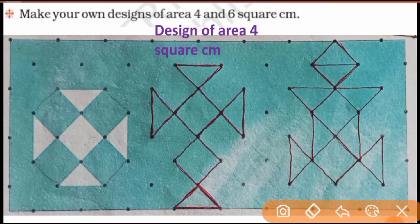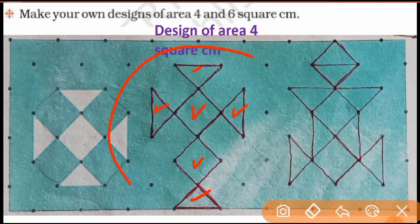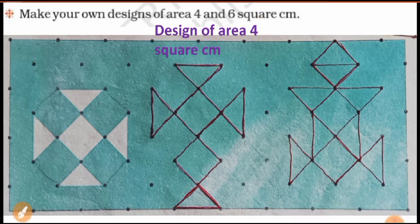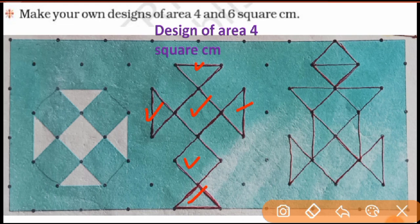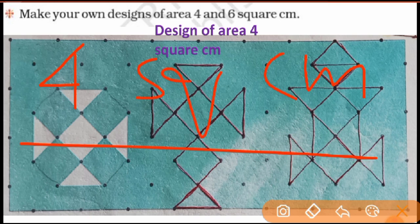This design has area 4 square centimeters. Here is 1 complete square and 2 complete square, that's 2 complete. Then two halves make 3, and two more halves make 4. Count: 1 square, 2 square, these two halves are 3, and these two halves are 4. Total 4 squares, so area is 4 square centimeters.